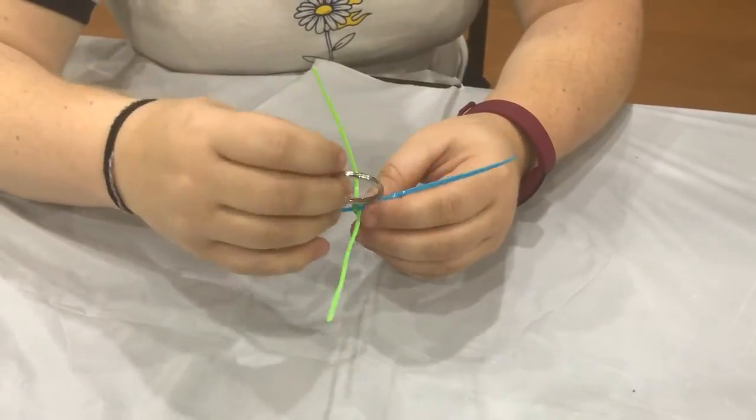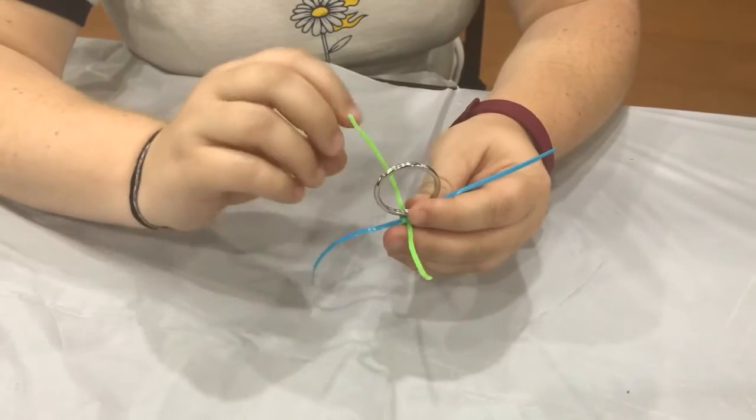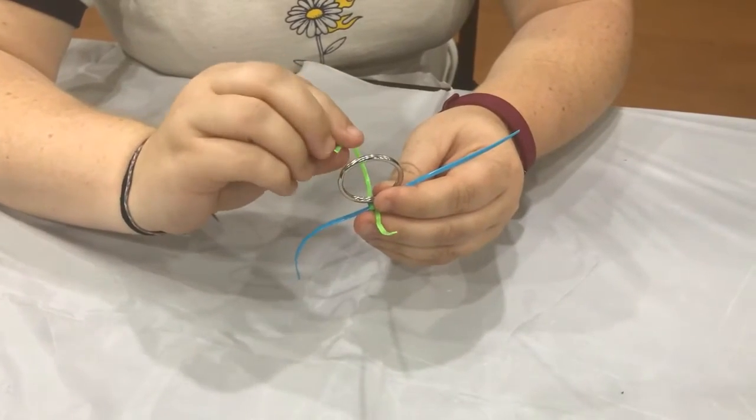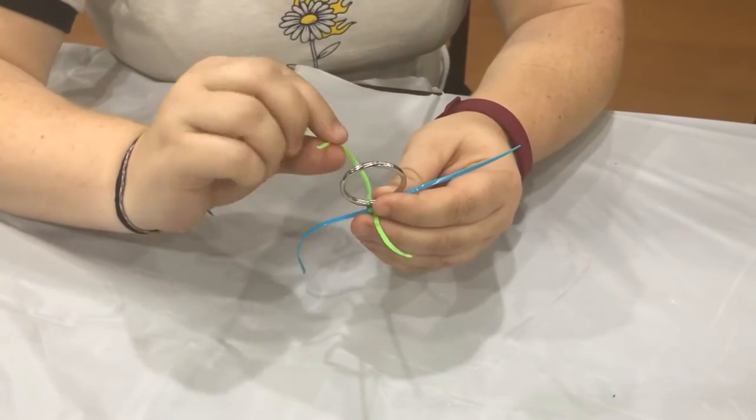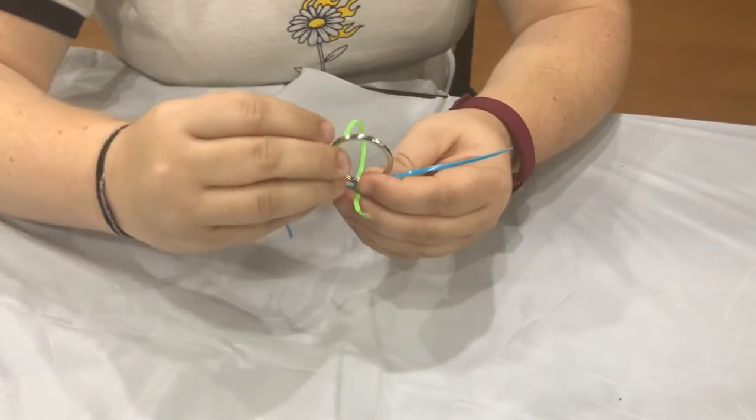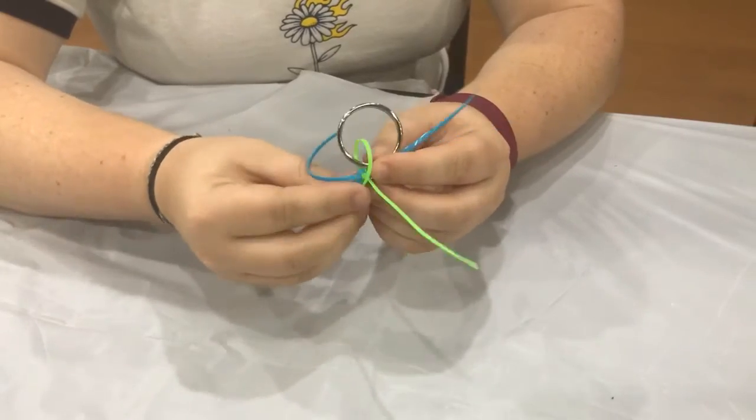So once you're towards the end and you don't have a lot of pieces of string left, you're going to tie it onto the keychain. And what you're going to do is you're going to place the keychain in the middle. And you just do your basic knot that you've been doing.